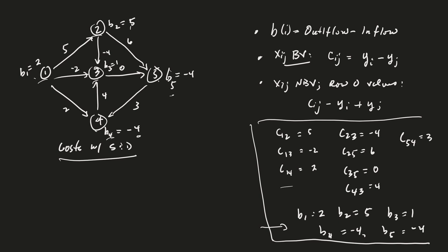And then finally, I'm making a note of the three computational formulas that we use. Bi is equal to outflow minus inflow for each node. So that tells us how to compute the Xij. If Xij is a basic variable, then we know for that arc ij, we know that the cost Cij is equal to yi minus yj. And if Xij is a non-basic variable, then the row 0 value for that arc we could write as Cij minus yi plus yj. And, of course, the idea is we're looking for these to be all positive.